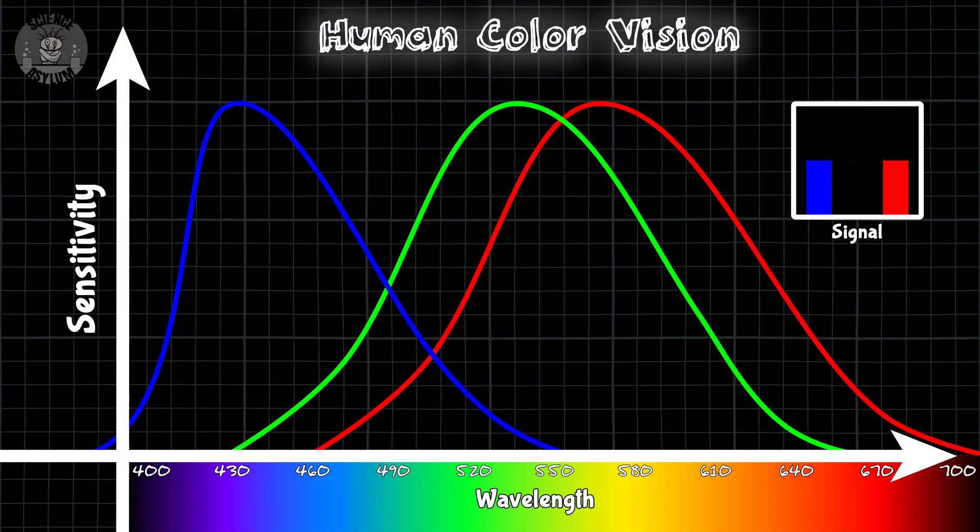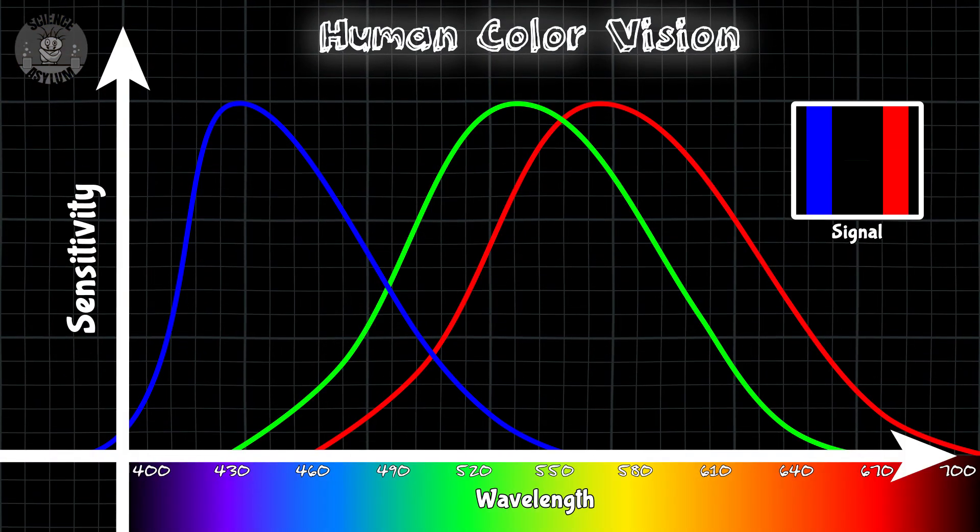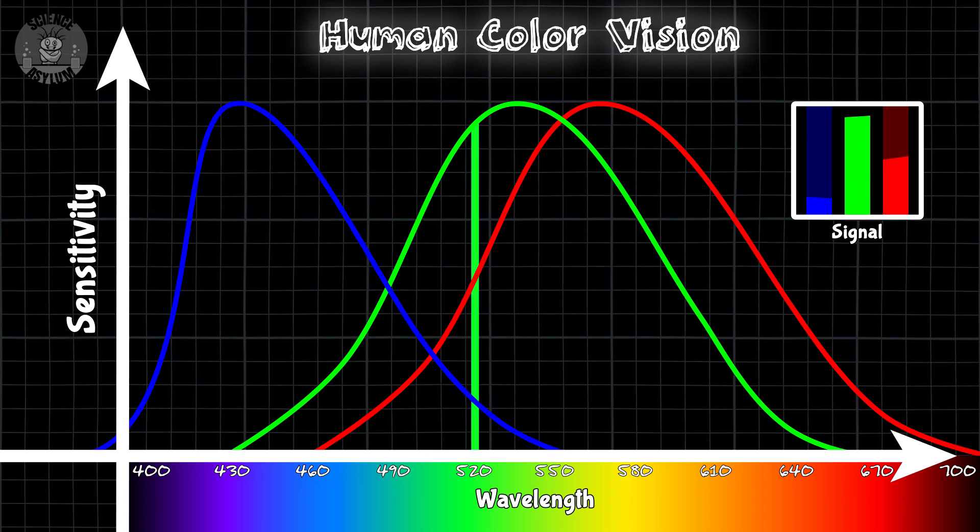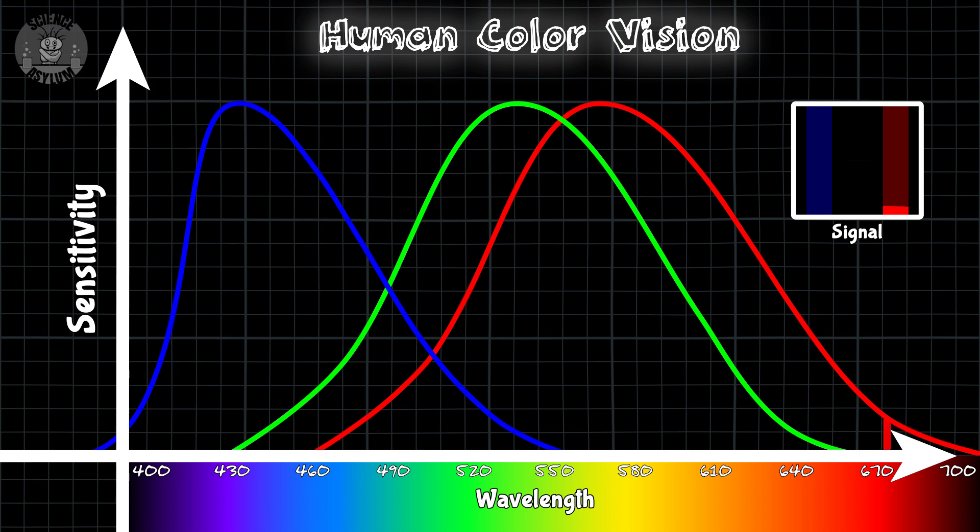But here's the thing. There are signal combinations the brain can receive that aren't created by a single wavelength of light. What if the blue and red cones activate intensely at the same time? None of the colors on the visible spectrum are going to do that. But if your brain gets that signal, it's got to make sense of it somehow.